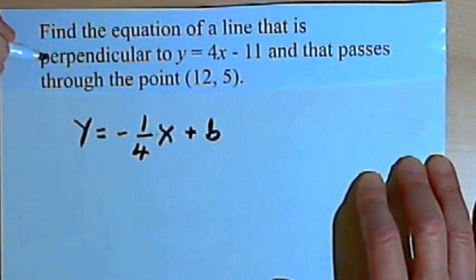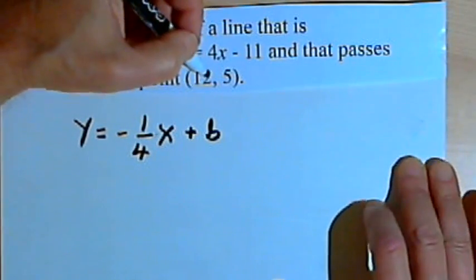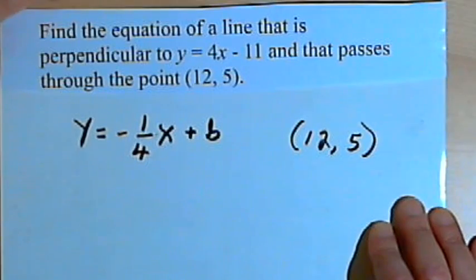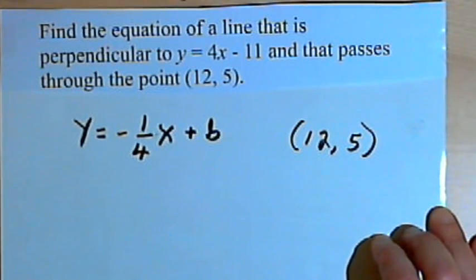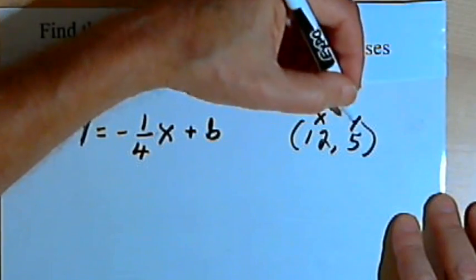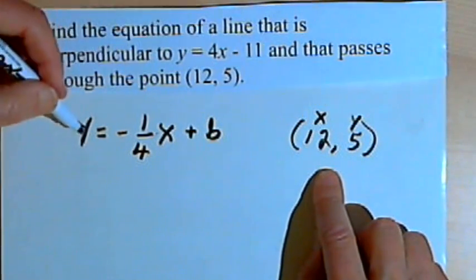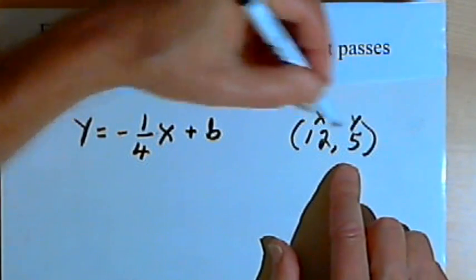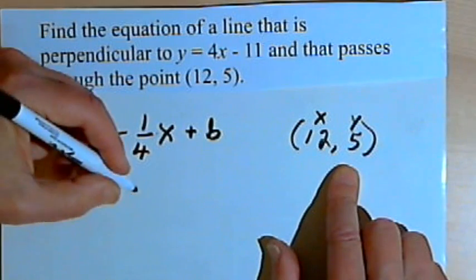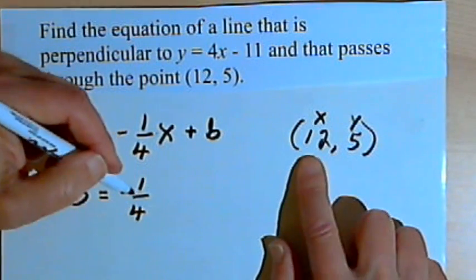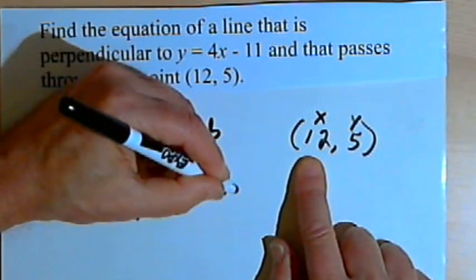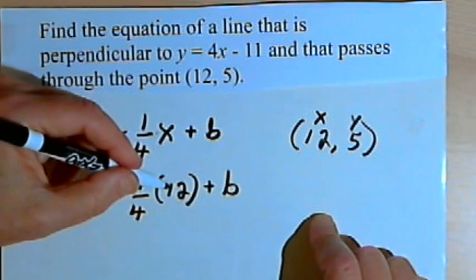I've got to find b. To find b, I need a point on the line, and I have the point (12, 5). The point is an ordered pair — the first value, 12, is an x-value, and the second value, 5, is a y-value. So I can plug those into my equation. I'll substitute y with 5 and x with 12, giving me: 5 equals negative 1 quarter times 12 plus b.